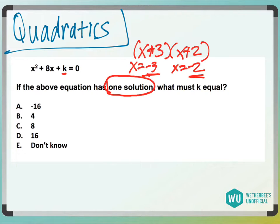And that's because I have a plus 3 here and a plus 2 here. So if I have one solution, it means that these numbers must be exactly the same. So I'm going to put an x here. I'm going to put an x here.